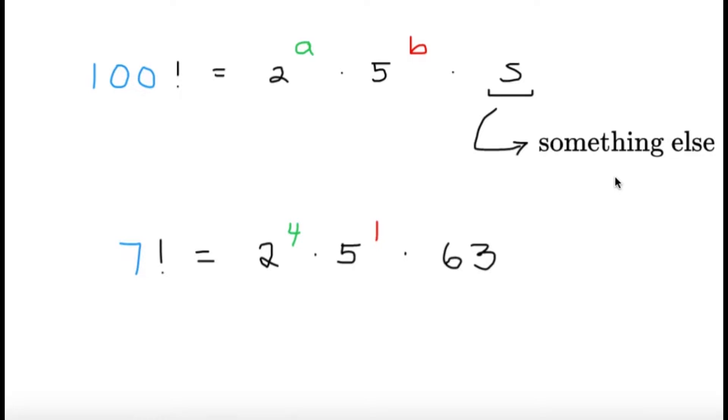And we can try to make the observation here that let's try a smaller number, like 7 factorial, a smaller number that we can actually work with. If I write that in the form as 2 raised to a times 5 raised to b times s, I'm going to get 2 raised to 4 times 5 raised to 1 times 63. Now, the 63 is the something else. It doesn't really contain any other powers of 2 or 5.